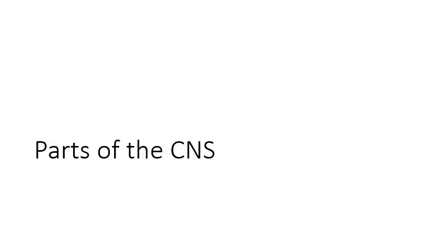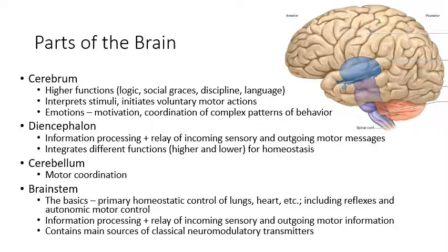Now we can go into the actual parts of the central nervous system. The brain is divided into four big parts, and each of those has smaller parts within it, and those smaller parts have subparts — there are hundreds of different structures in the brain, and we'll only talk about the first couple of levels. The four main parts of the brain are the cerebrum, the diencephalon, the cerebellum, and the brainstem.